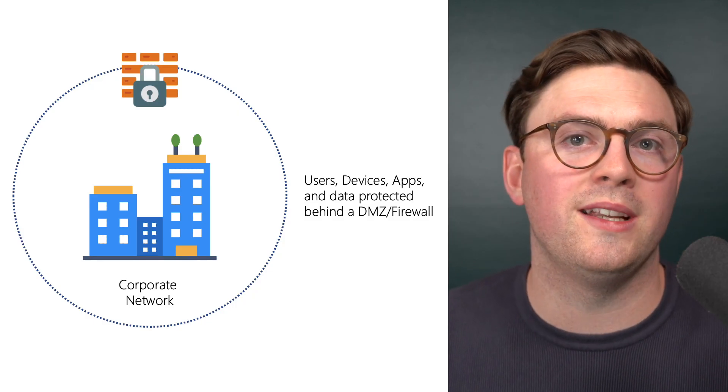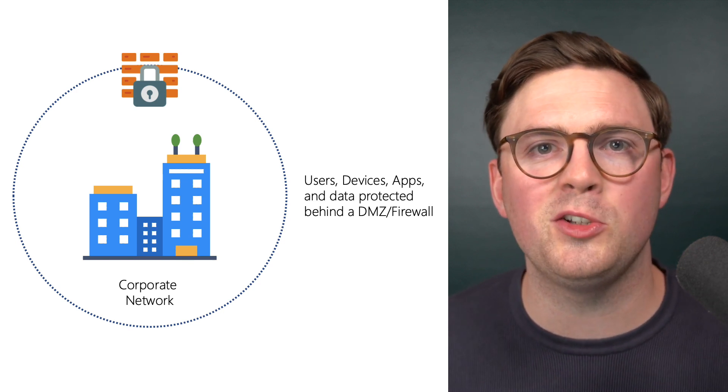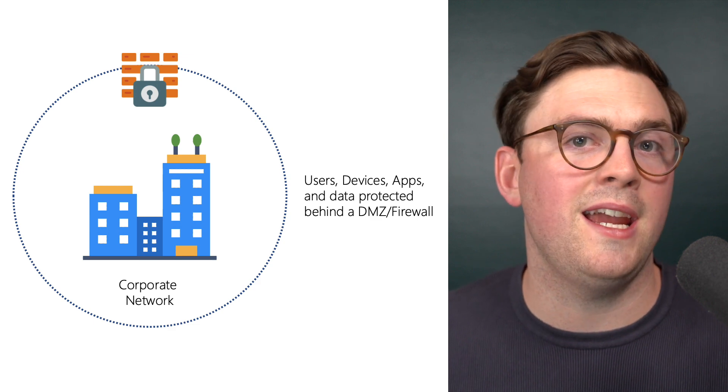Everyone's familiar with the historical security model where everything was within a secure perimeter — for example, the four walls of your data center. Here, all your applications, data, and resources are protected within your secure network, and users would connect via VPN. The idea was that if you couldn't connect to the secure network, you couldn't access any of these resources. But what ended up happening is that many resources went unprotected. It was very hard for organizations to get the visibility needed to integrate different solutions and achieve end-to-end security, so they had to look for a new security model.